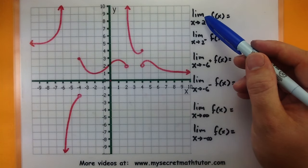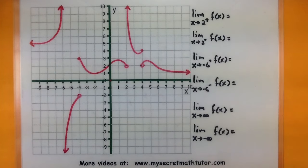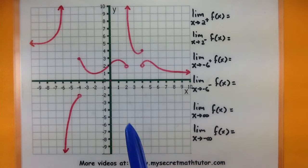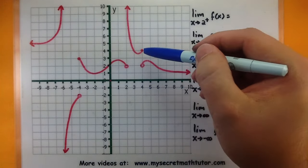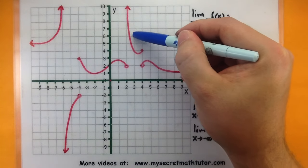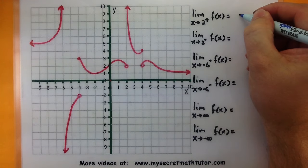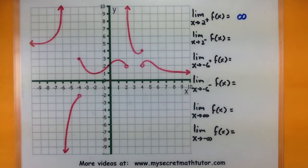This first one asks: what is the limit as x approaches 2 from the right of our function? Let's find 2 on our x-axis. Here we are. We're approaching 2 from the right side. Well, if we look at our function as we're approaching 2, notice how it just gets arbitrarily large, just keeps going up and up and up. So this is an indication that the limit would be at infinity.